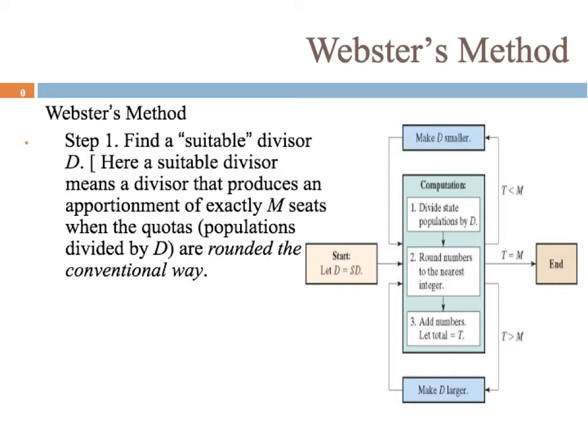When we're finding a divisor, remember that if the number of seats is too small in the end, we'll need to make that divisor a little smaller to get the numbers to work out the way we want them. If the number of seats is a little bit larger, then we'll make that divisor larger, and we'll repeat that process until we get the seats to add up to what they're supposed to add up to.